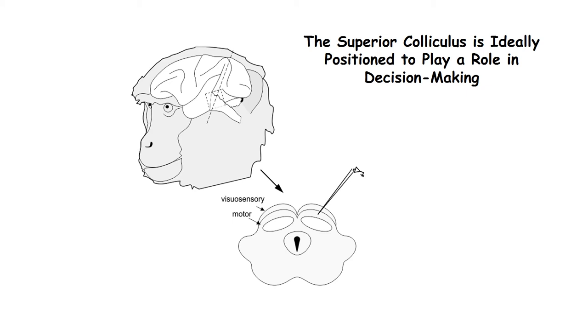Trinity made recordings from intermediate layer neurons, showing delay period activity, while monkeys performed the yes-no decision task.